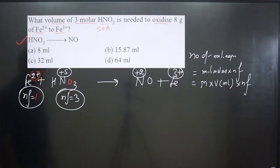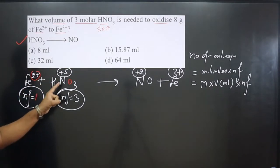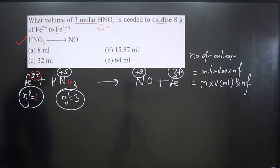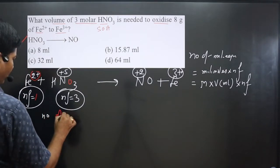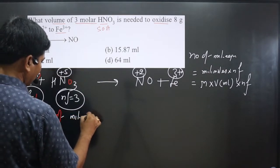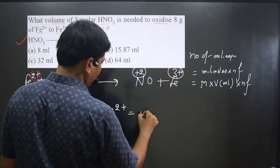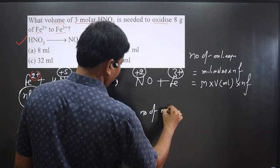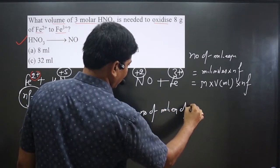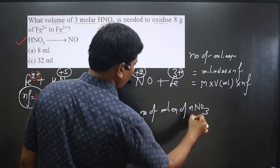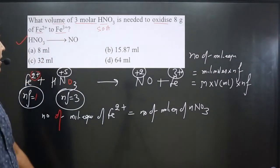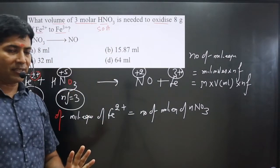So now we can equate the milliequivalents of Fe²⁺ with milliequivalents of HNO₃. Apply the beautiful concept and then we can answer this question. Number of milliequivalents of Fe²⁺ is equal to number of milliequivalents of HNO₃. Based on the data provided, we apply the formula. The mass of Fe²⁺ is given there. From the mass, we can get moles.